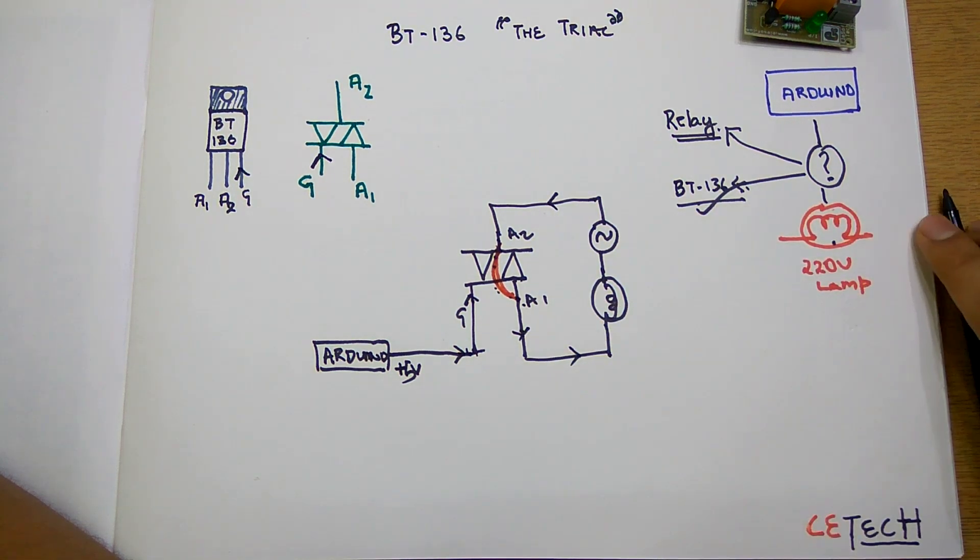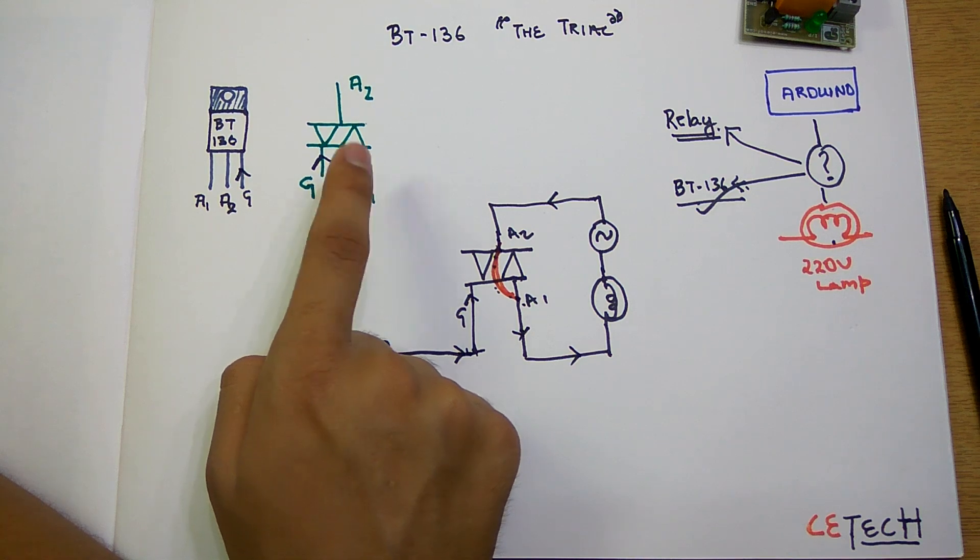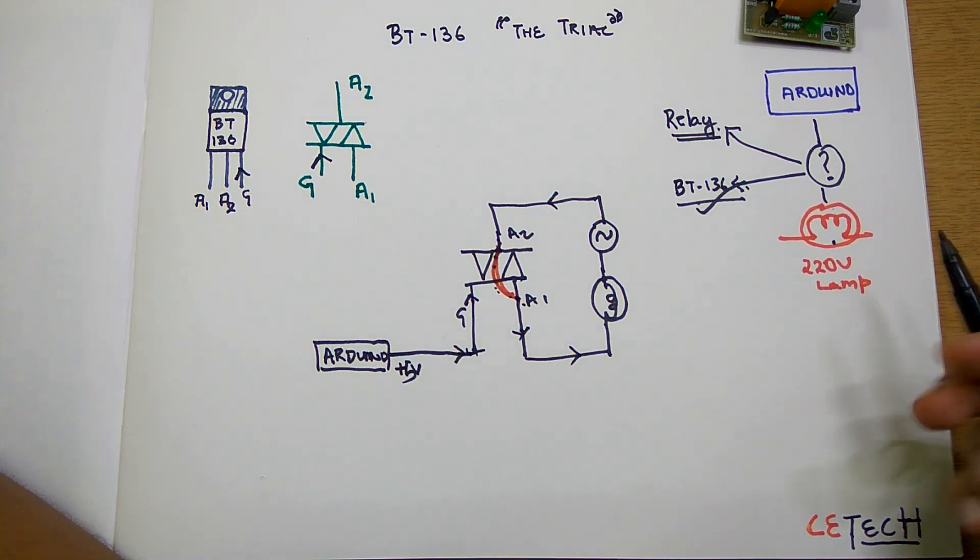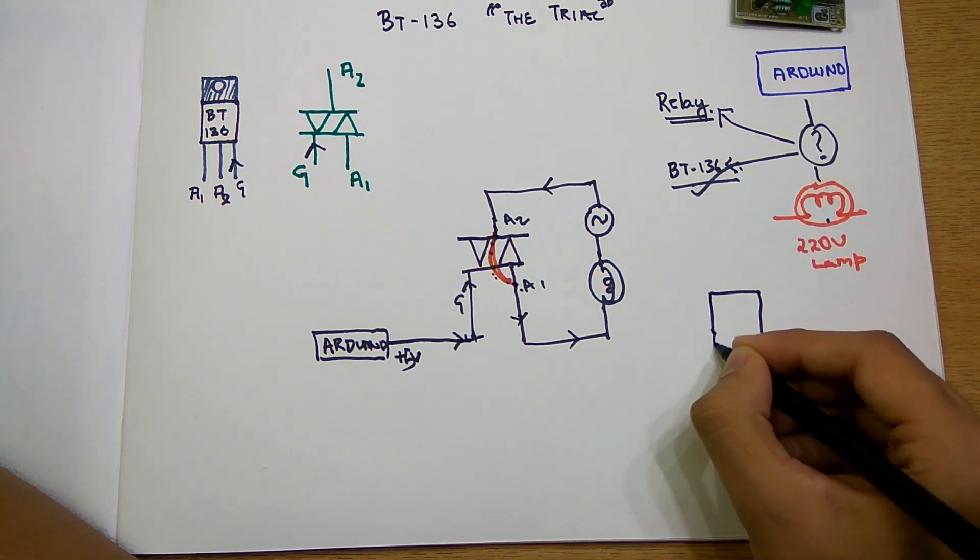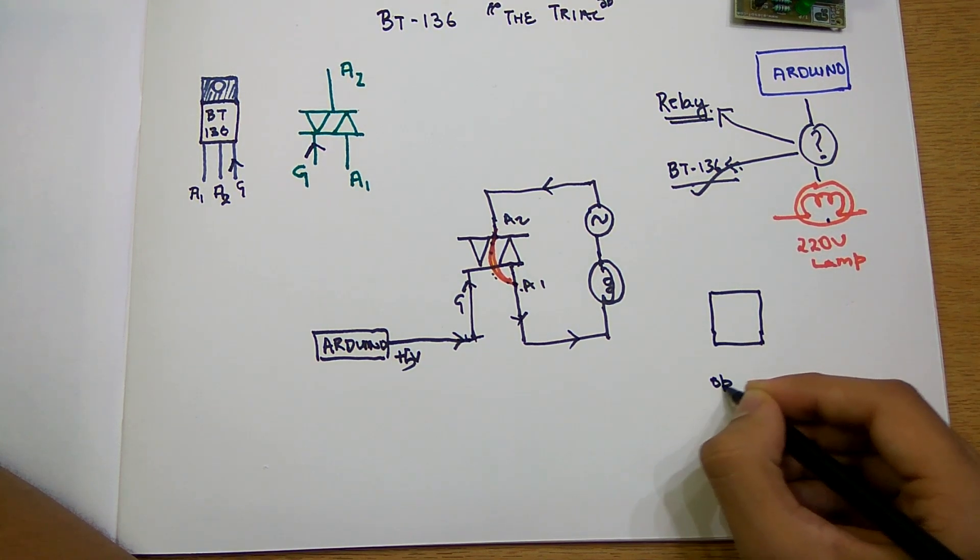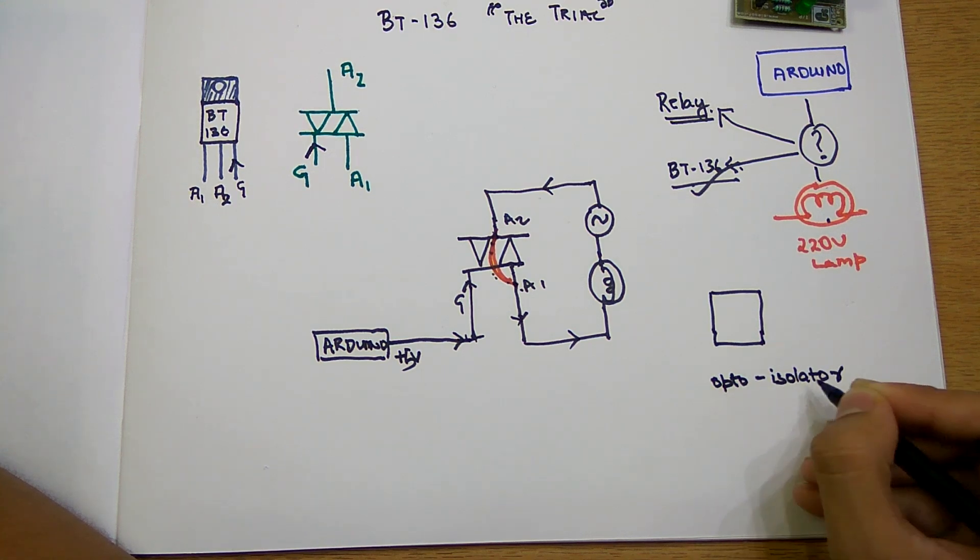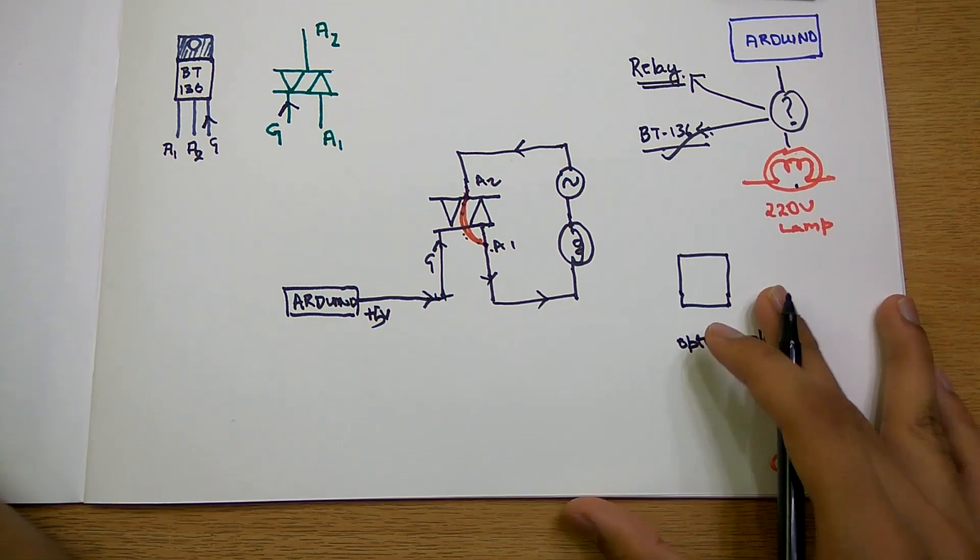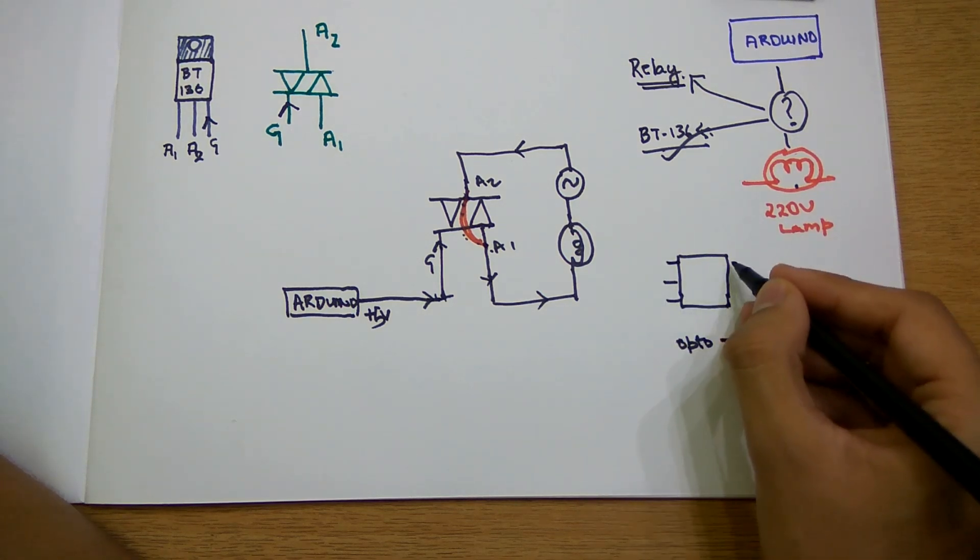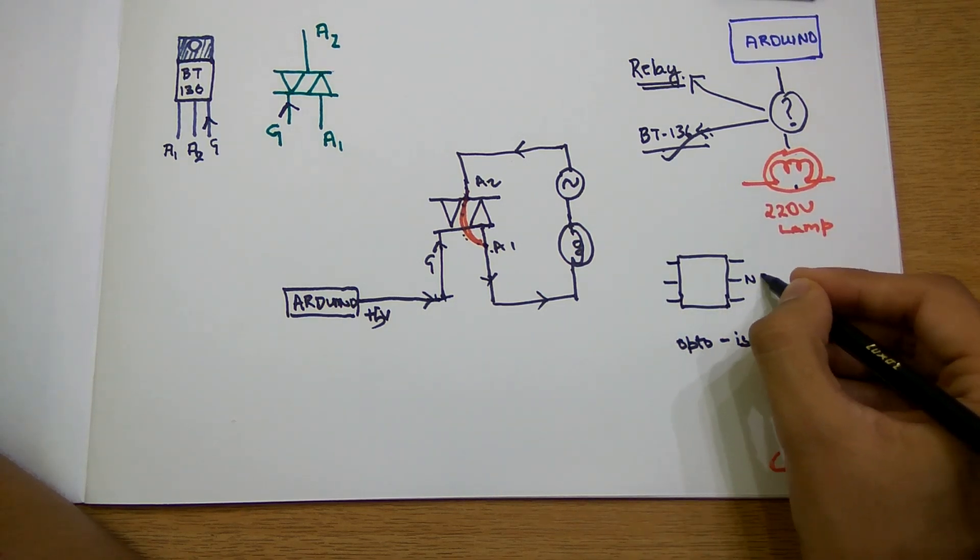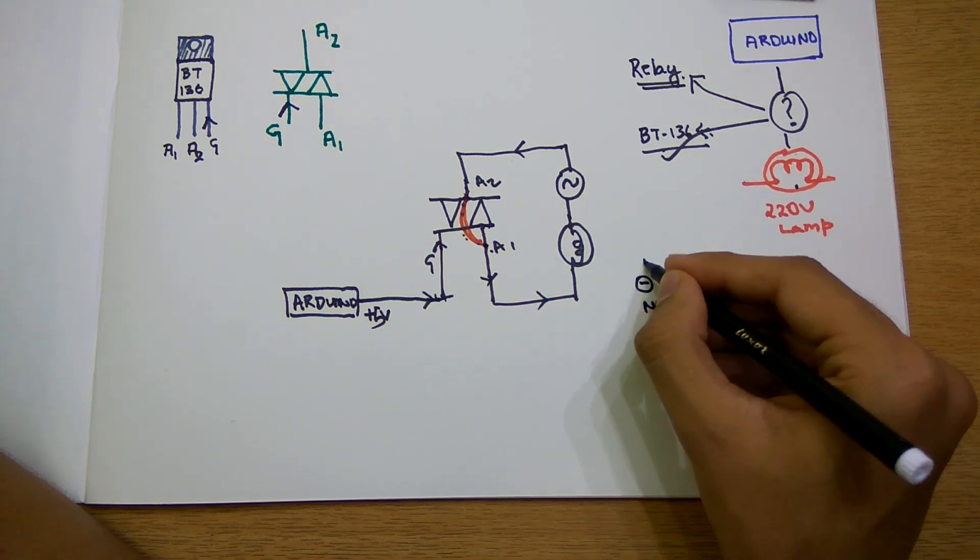And your lamp goes on. So this is how this works. Instead of this, we can also use an opto-isolator. For using this opto-isolator, there are six pins wherein this is no connection, this is no connection, this is minus, and this is plus.